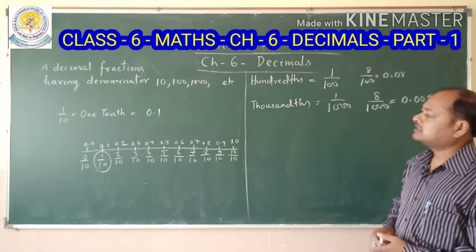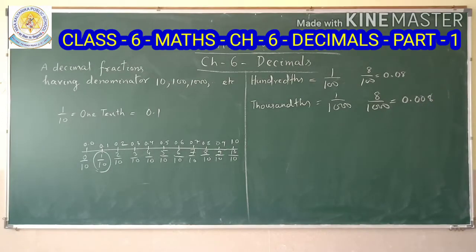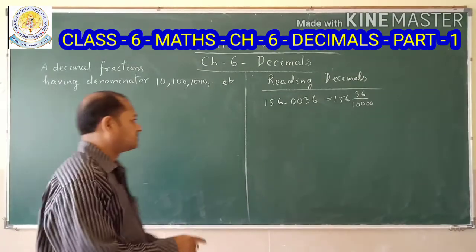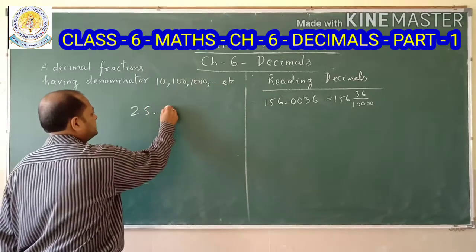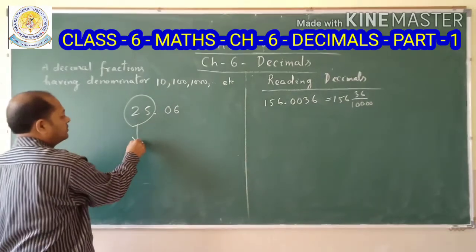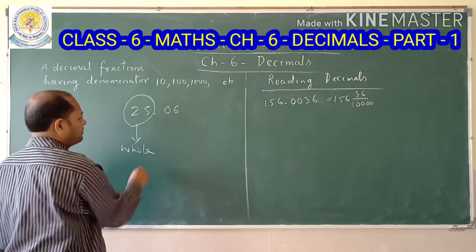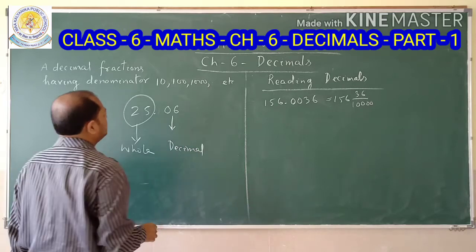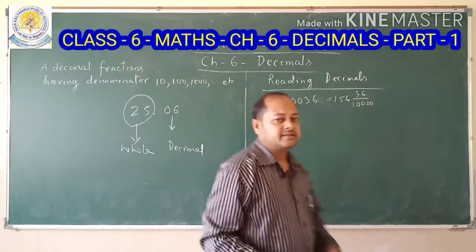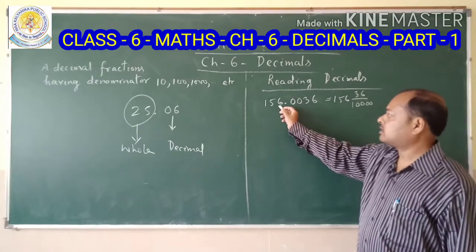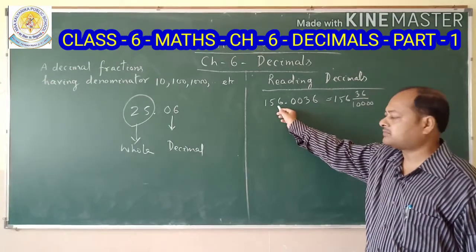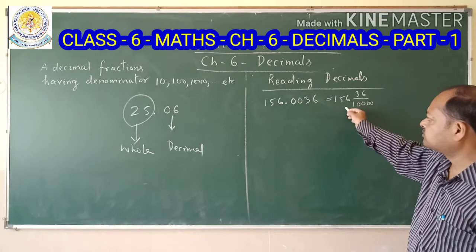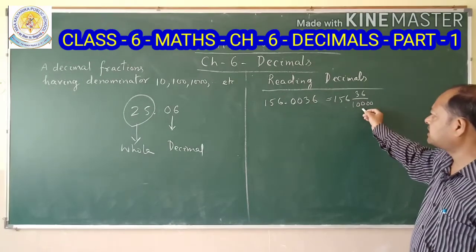A decimal number is represented by two parts. For example, the number 25.06 — here 25 is the whole part and .06 is the decimal part. Another example: 156.0036. Here 156 is the whole part and .0036 is the decimal part.